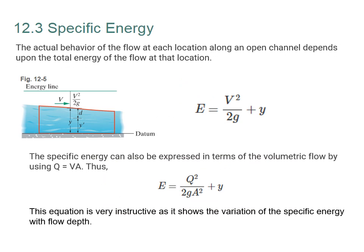The actual behavior of the flow at each location along the open channel depends upon the total energy of the flow at that location. We can write the energy equation as the sum of kinetic energy V²/2g plus Y, which is the potential energy. Specific energy can also be written in terms of the volumetric flow rate using Q equals V times A. We can then write the specific energy equation into the form we will use going forward.